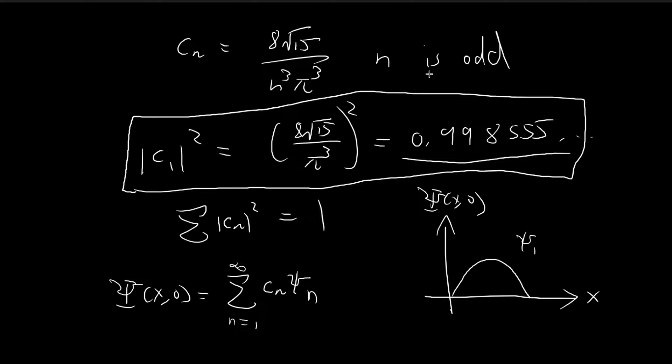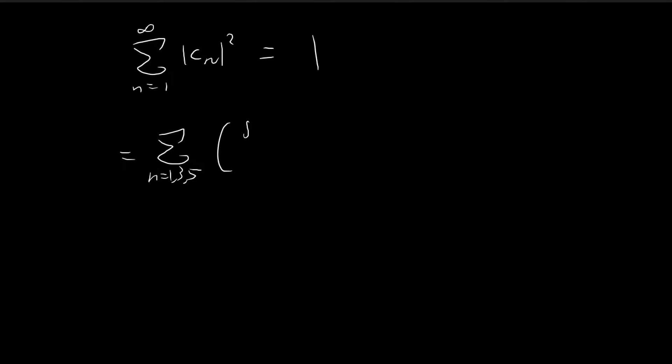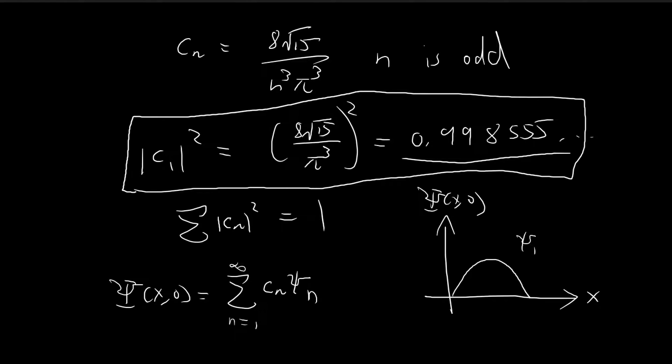The second observation we can make is that we can verify that this identity here is indeed true. The sum of all the cn squared is indeed equal to 1. In this case, we only need to consider when n is an odd number because for even, cn is just equal to 0. So we substitute this expression in: (8√15/n³π³)² squared.